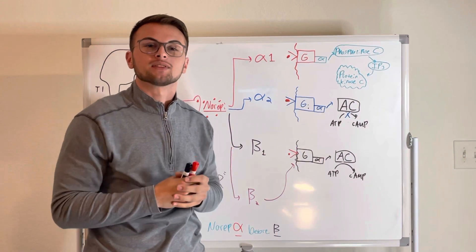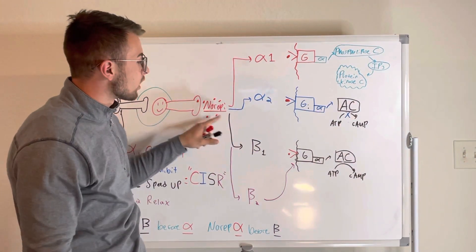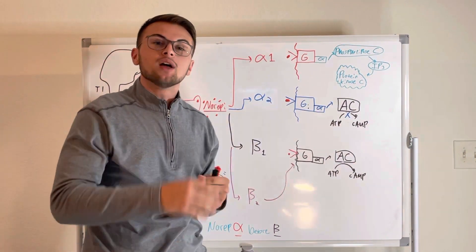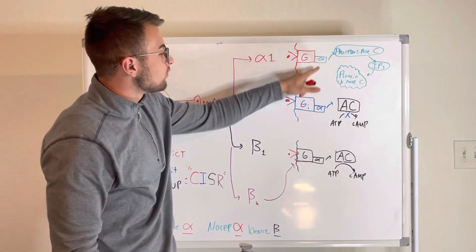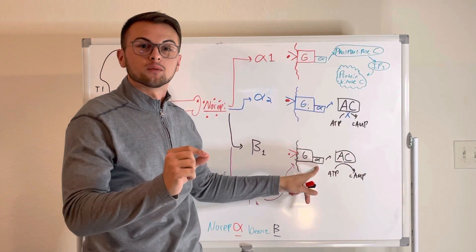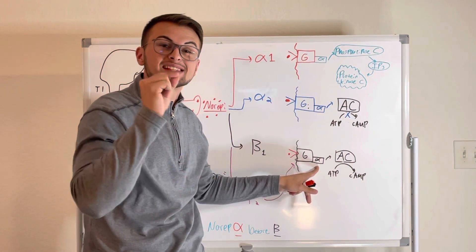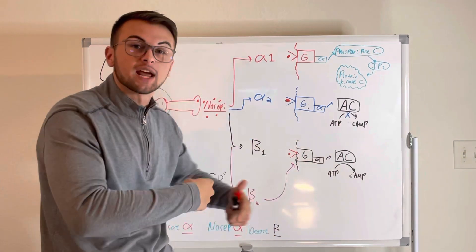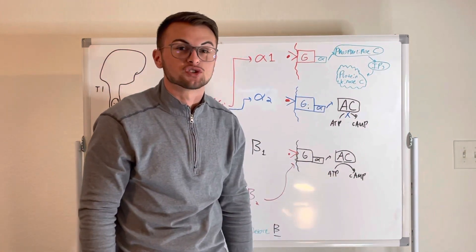But we're only going to talk about the alpha unit today. So the neurotransmitter, which in our case is norepinephrine, will bind to the outer portion of that G protein. And then the alpha subunit, remember that's the important one that we're talking about today, will bind to GTP. And then this alpha unit will start a chain reaction, which will increase substances called second messengers in the cell.